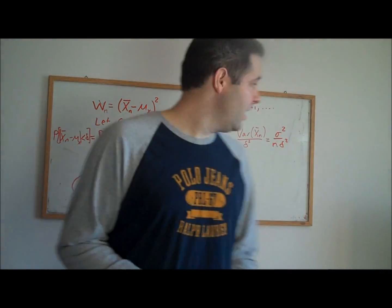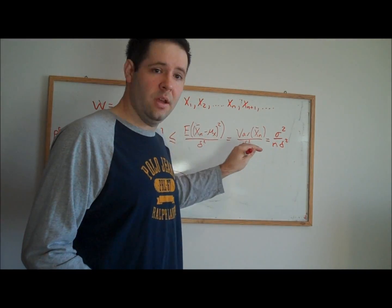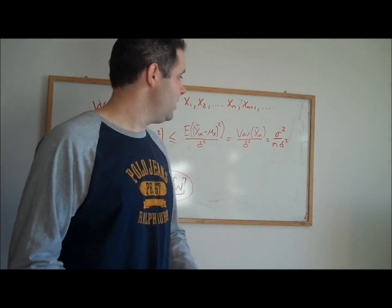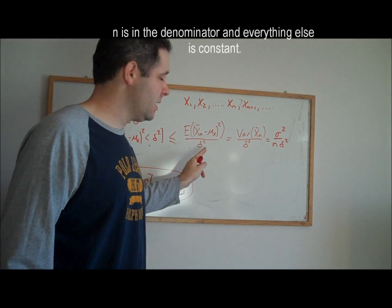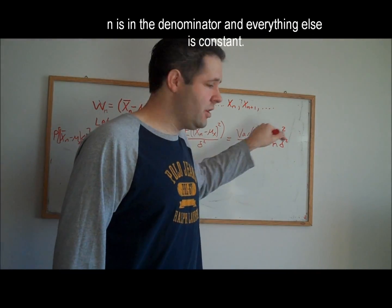Now delta has been held constant throughout all of this, just letting n go to infinity. It's not hard to see that this sequence of expectations here is going to go to zero.